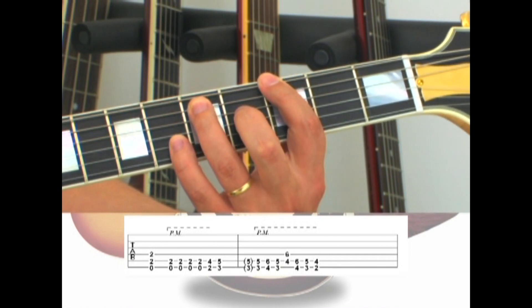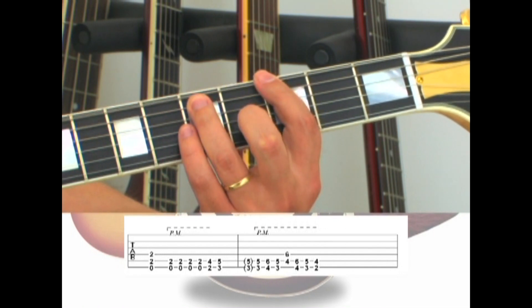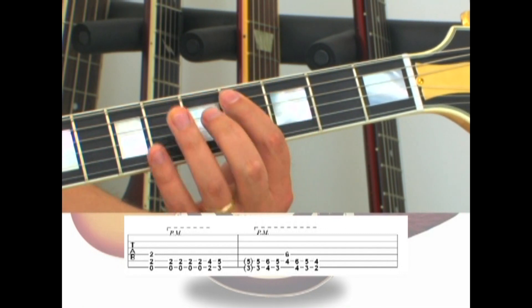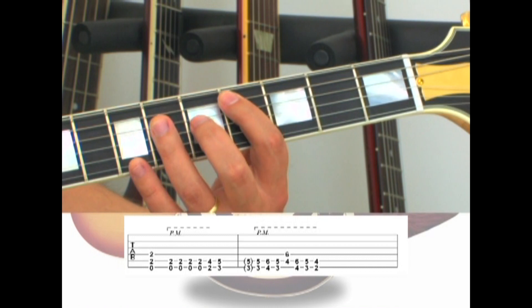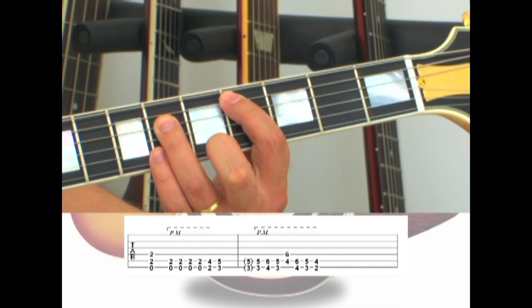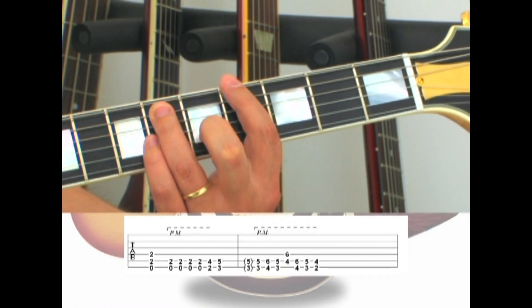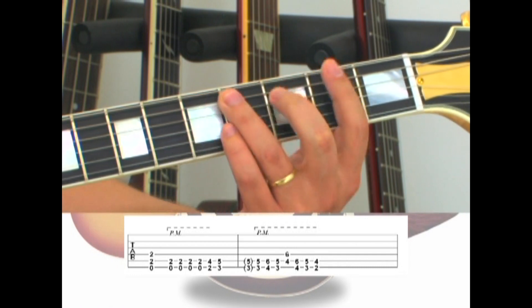G5, up one fret to Ab5, back down to G5, move to the 5th string 4th fret along with the 4th string 6th fret for Db5, then the same frets on the 6th and 5th strings for Ab5, walk down to G5, walk down to F sharp 5.